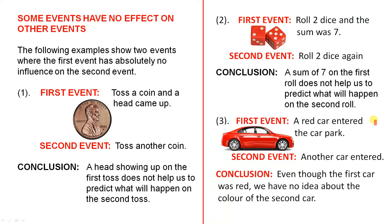The third example: the first event, a red car entered the car park. The second event, another car entered. Even though the first car was red, we have no idea about the colour of the second car.